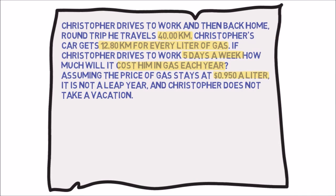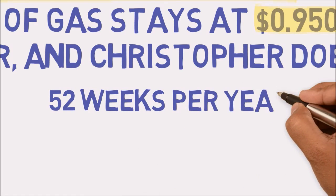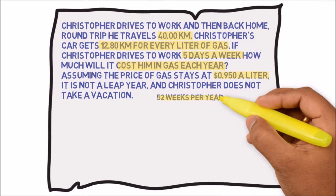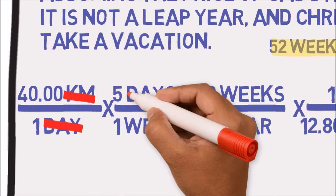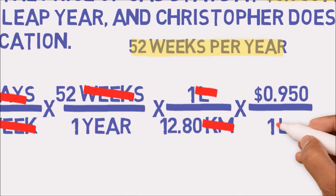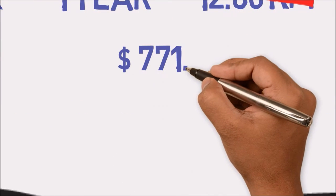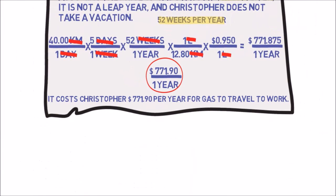What information is missing from the problem? Well, in addition to the given information, we will need the conversion factor that there are 52 weeks per one year. We are now able to arrange a solution. Remember, we are looking for the units dollars per year. So the units of our calculation must work out to dollars in the numerator and year in the denominator. We are now ready to calculate the answer. Round to the correct number of significant figures and write a concluding statement. It costs Christopher $771.90 per year for gas to travel to work.